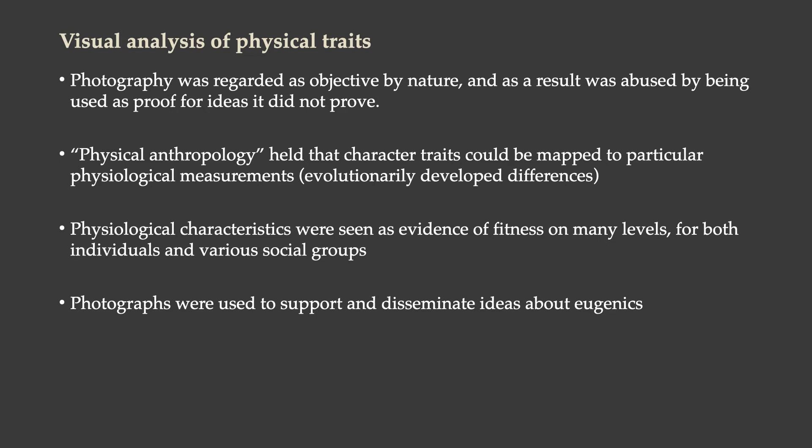Physical anthropology held that character traits could be mapped to particular physiological measurements because of differences that developed through evolution. This was used as the basis for bogus race science. Physiological characteristics were seen as evidence of fitness — mental fitness, fitness of character — both for individuals and for various social groups. And photographs were used to support and disseminate ideas about eugenics and race science.